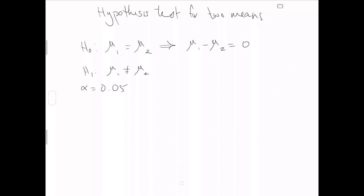In a similar way, continuing forward with our difference of two proportions, here our difference of two means is going to allow us to create a test statistic T, where we estimate the difference of the two means, subtract off the null hypothesis, and divide by an appropriate standard error. That standard error calculation is actually fairly difficult to do, so we are going to avoid it. It's no more difficult than it is for the two proportions case, but I don't think we need to dive into the details. We are going to let R figure out how to do this test for us, so long as we can write the appropriate code.